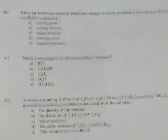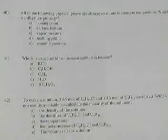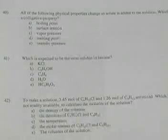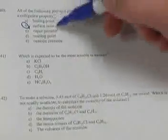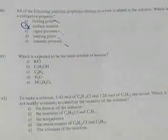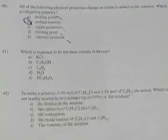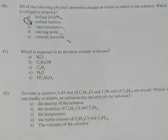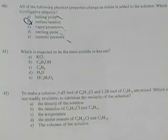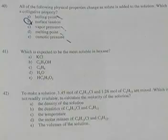Last page. Question 40: all these physical properties change as solute is added, but which is not a colligative property? Surface tension is not a colligative property. Boiling point, melting point, vapor pressure, and osmotic pressure all depend on the amount of substance in solution. Surface tension depends on what the substance is made of — for example, water versus alcohol or pentane.